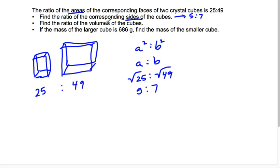Then what I want to do is find the ratio of the volumes. Well, if I know the sides ratio is A to B, then the ratio of the volume, given the pattern we discussed earlier, is A to the third to B to the third. So I'm going to take 5 cubed to 7 cubed, and that's going to get me 125 to 343. So that's the ratio of the volume of the cubes.